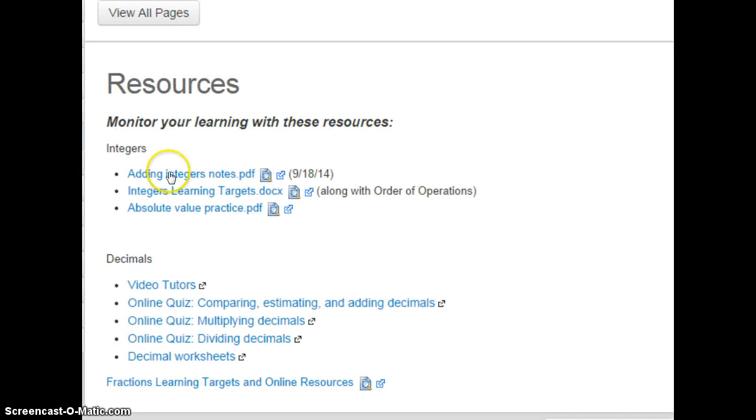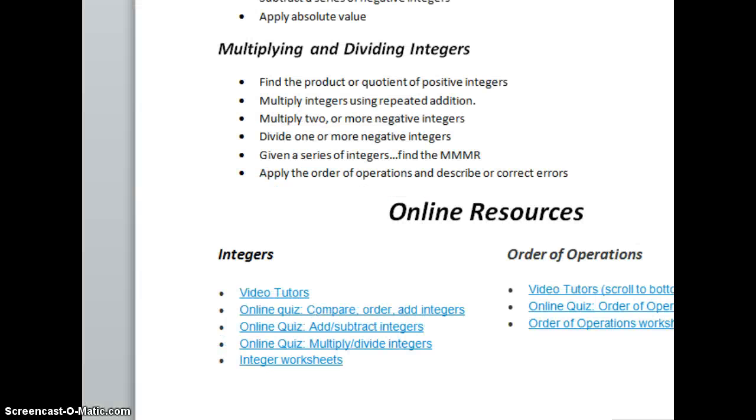You might not be familiar with this, but there's a page called Resources. And in this Resources page in Canvas, you can monitor your learning. And with integers, I put the adding integer notes that we had from a couple of days ago, I put that in this section here. I also put in the integer learning targets and if you pull up that resource, if you click on that, it's going to take you to a document and you can find out all the different resources that are available there.